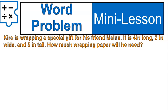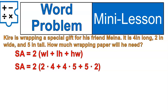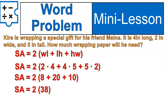Let's do one more word problem. Kyer is wrapping a special gift for his friend Melna. It is 4 inches long, 2 inches wide, and 5 inches tall. How much wrapping paper will he need? We are assuming he is wrapping it exactly and not wasting any paper — basically, it's asking for the surface area. When substituted, the line looks like: 2 times (4 times 2 + 2 times 5 + 5 times 2) — wait, inside: 2 times 4 is 8, 4 times 5 is 20, and 5 times 2 is 10. Simplify inside the parentheses to get 38, then multiply by 2 to get 76 square inches — that's how much wrapping paper Kyer will need.